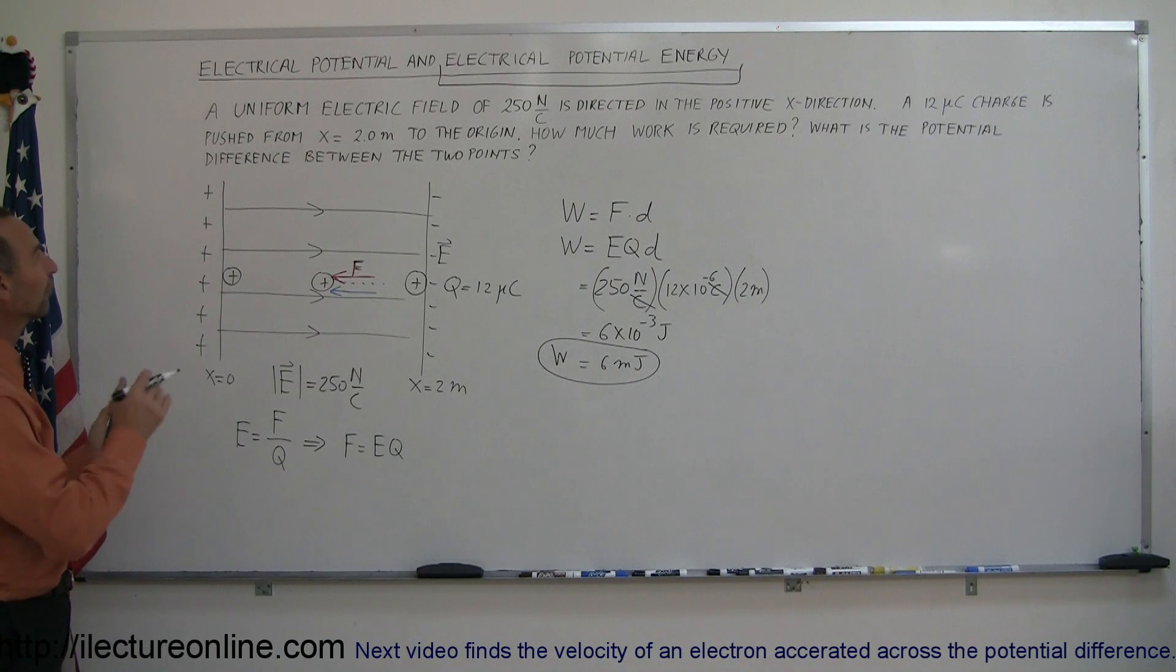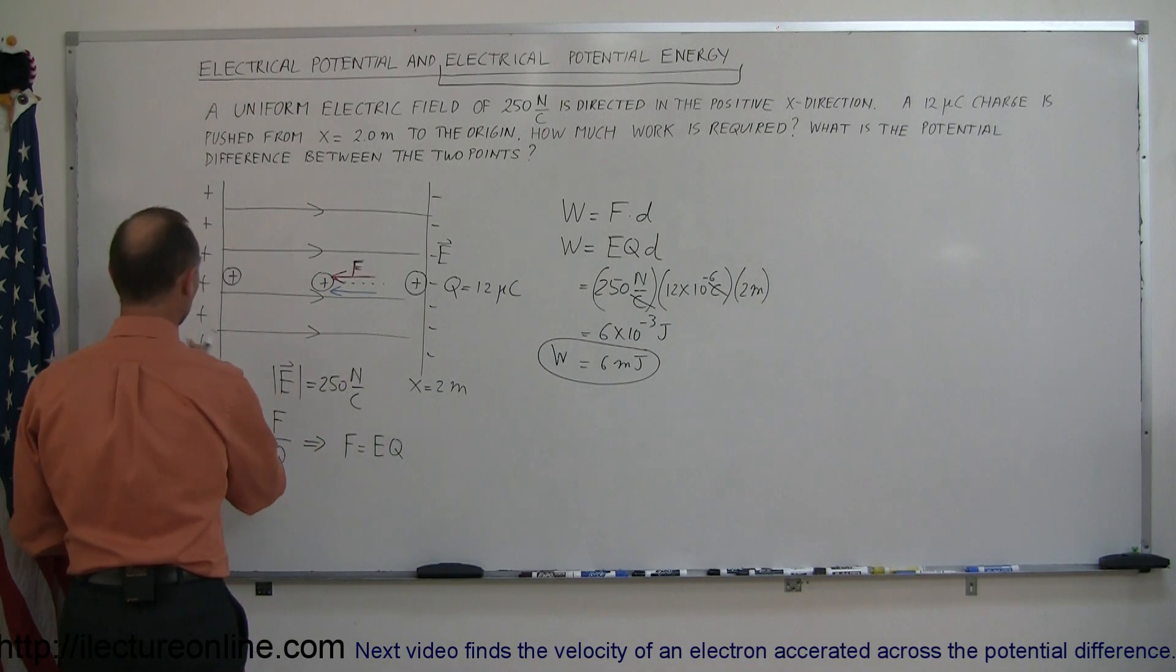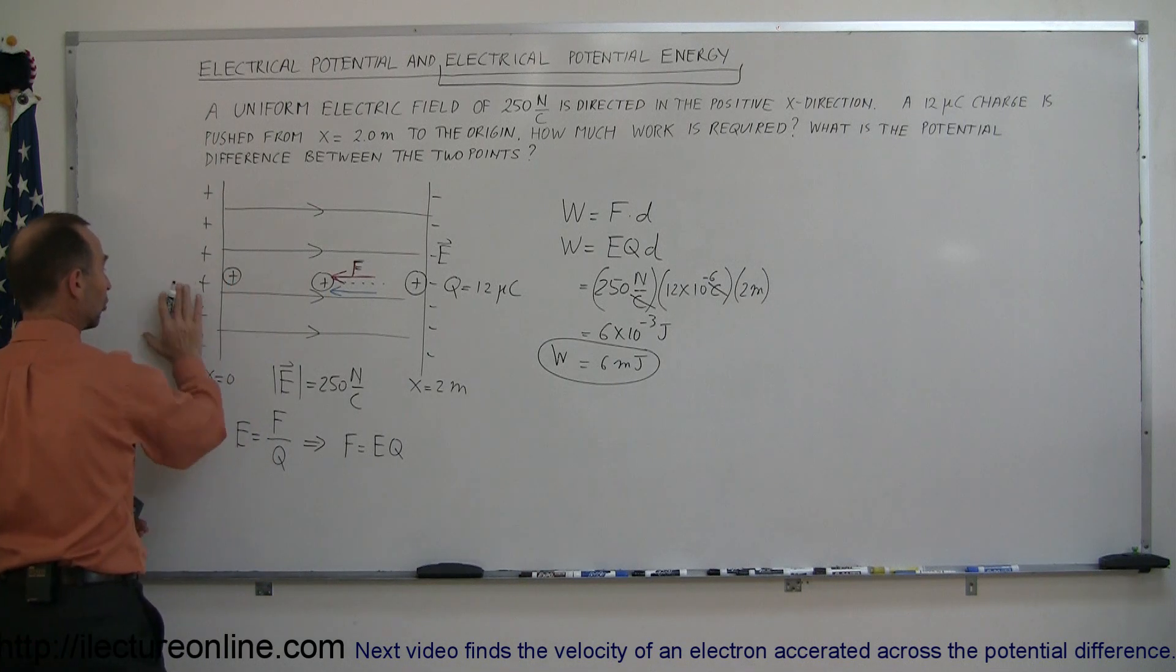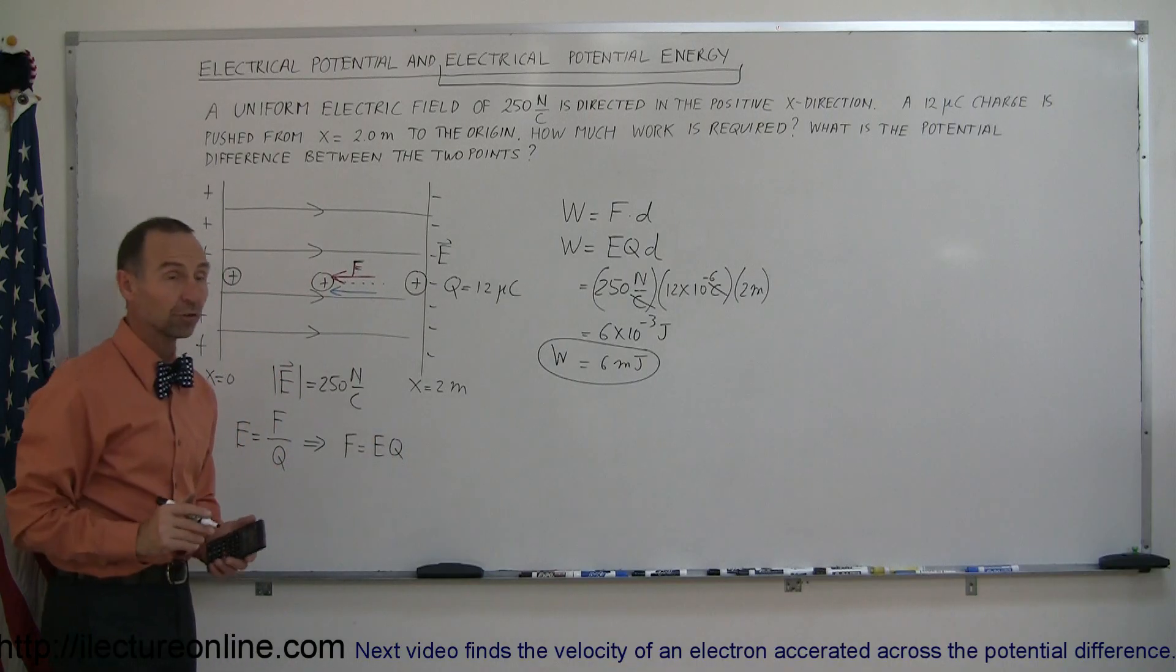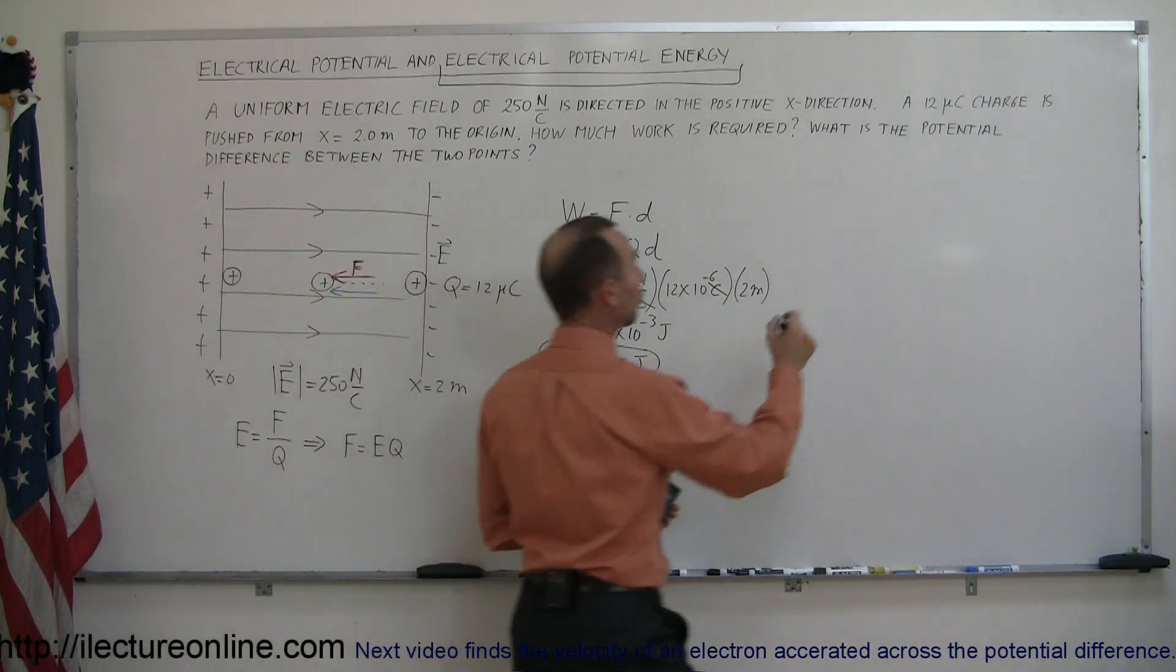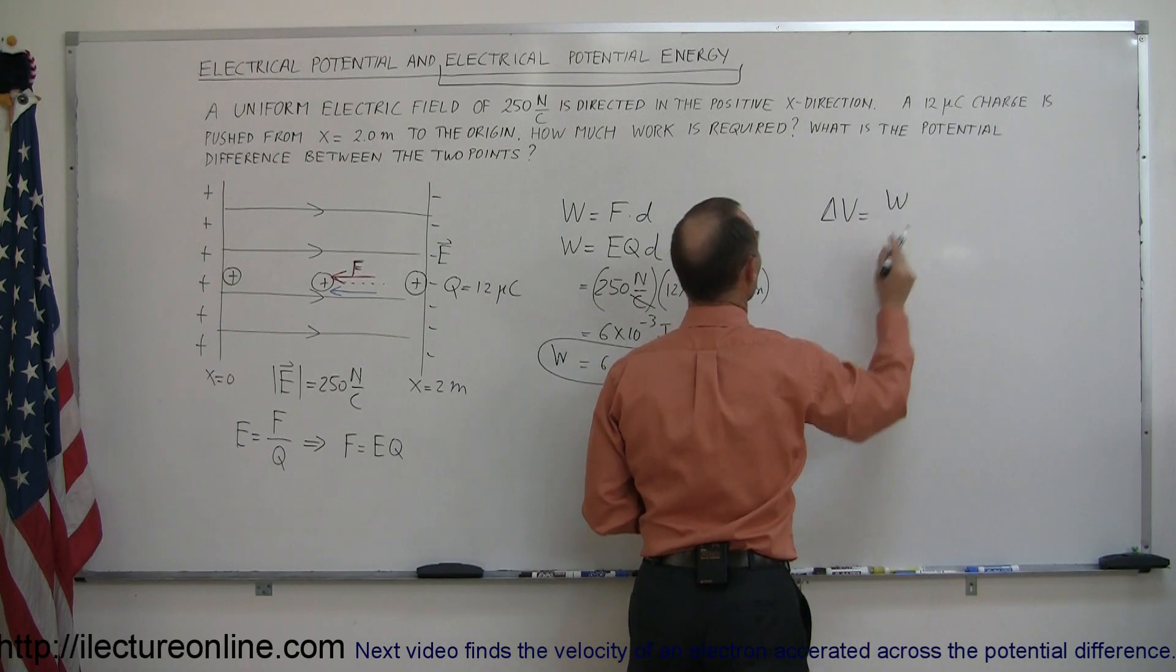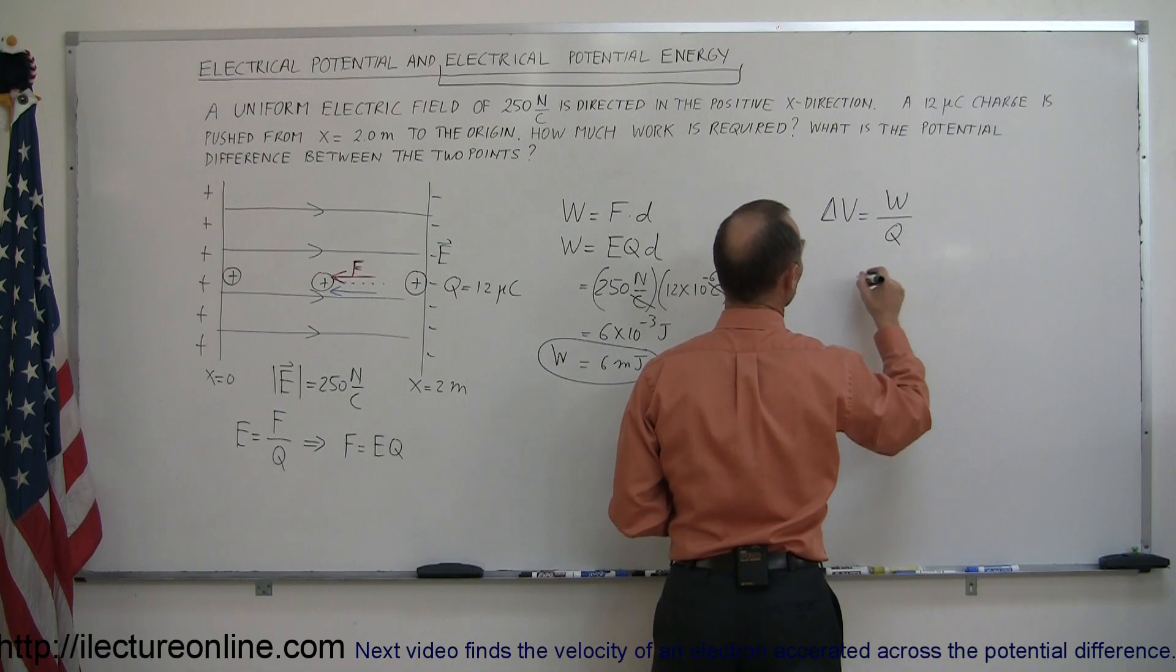Alright, now it says, what is the potential difference between the two points? What is the potential difference between x equals 2 meters and x equals 0? Since, of course, the positive charge is over here, this should be at a higher potential. The negative charge is over here, that will be at a lower potential. And the definition of potential difference, delta V, is equal to the work done to push a charge across that distance, divided by the size of the charge.